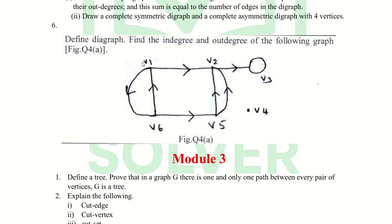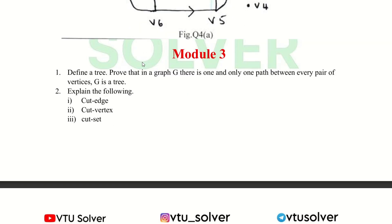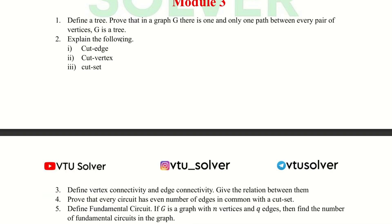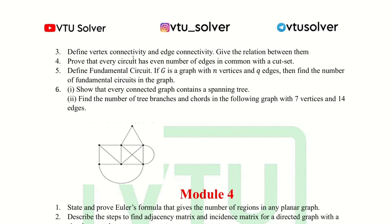The next module — module 3 — first question: define a tree and prove that in a graph G there is one and only one path between every pair of vertices if and only if G is a tree. The second question: explain cut edge, cut vertex, and cut set.